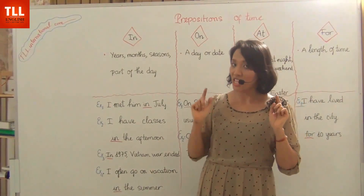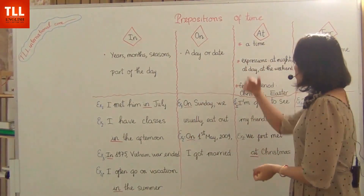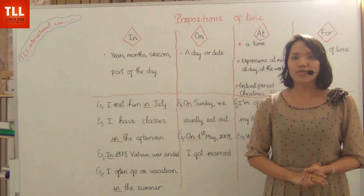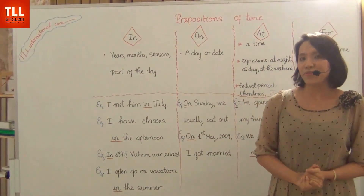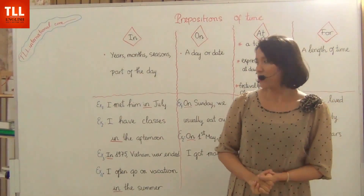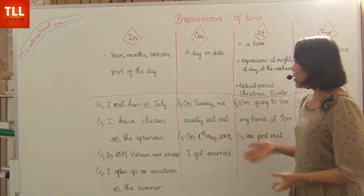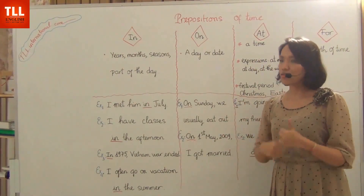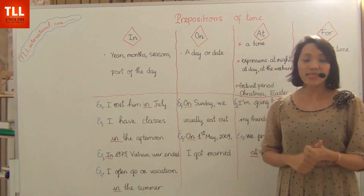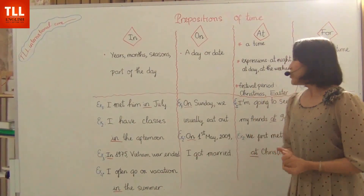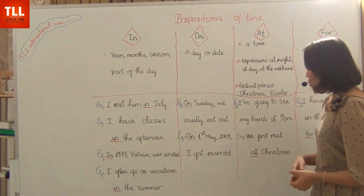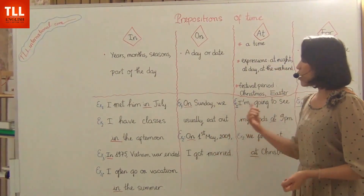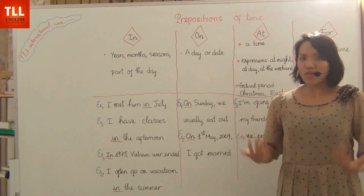The second preposition is 'on'. We use 'on' before a day or a date. For example: 'On Sunday, we usually eat out' — Sunday is a day of the week. The next example: 'On the first of May 2009, I got married.'